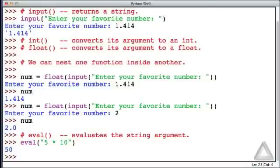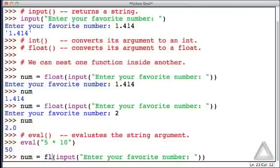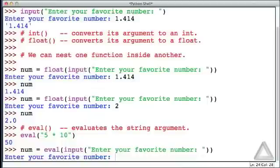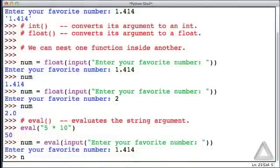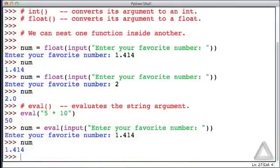Now let's go back to that input statement and change float to eval. We are saying that we want num to be assigned whatever eval returns, and what is it given? It's given the string that input returns. Hitting return, we're prompted for our favorite number. If we say 1.414 now, what is num? It's the float value 1.414.